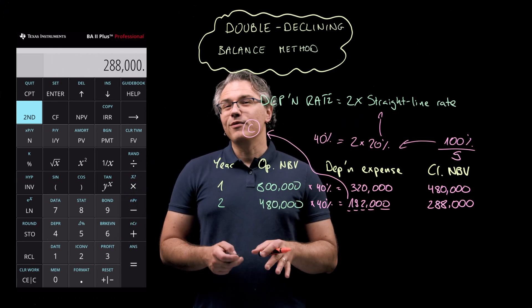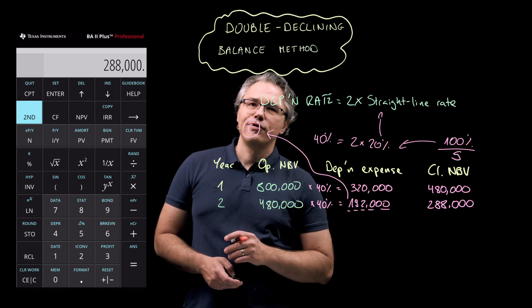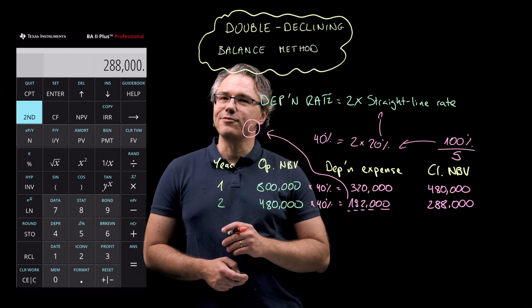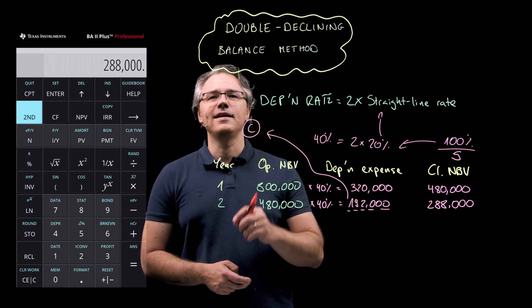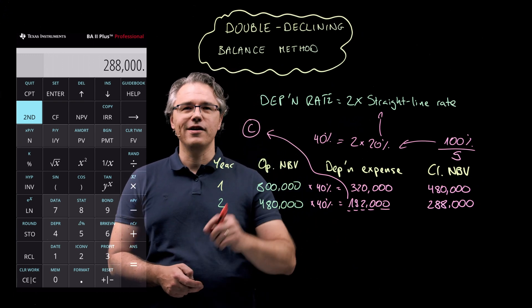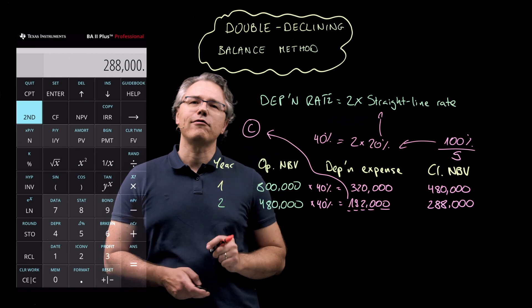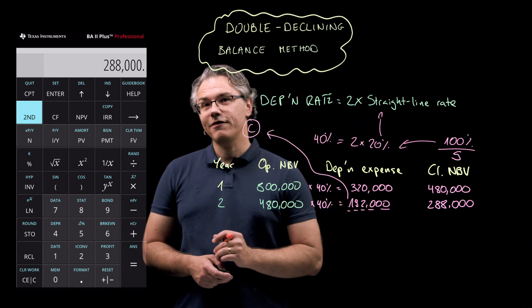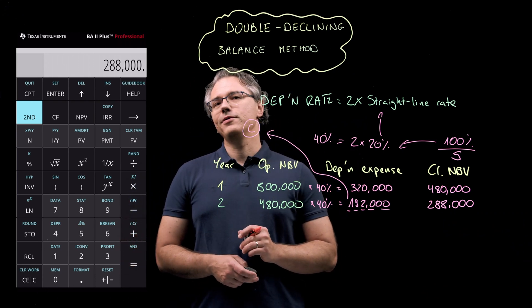Throughout this example, I've been telling you to ignore the information concerning the asset's estimated residual value. And yes, in the context of this question, this €65,000 figure is completely redundant. You don't need it. In fact, it's there just to confuse you.